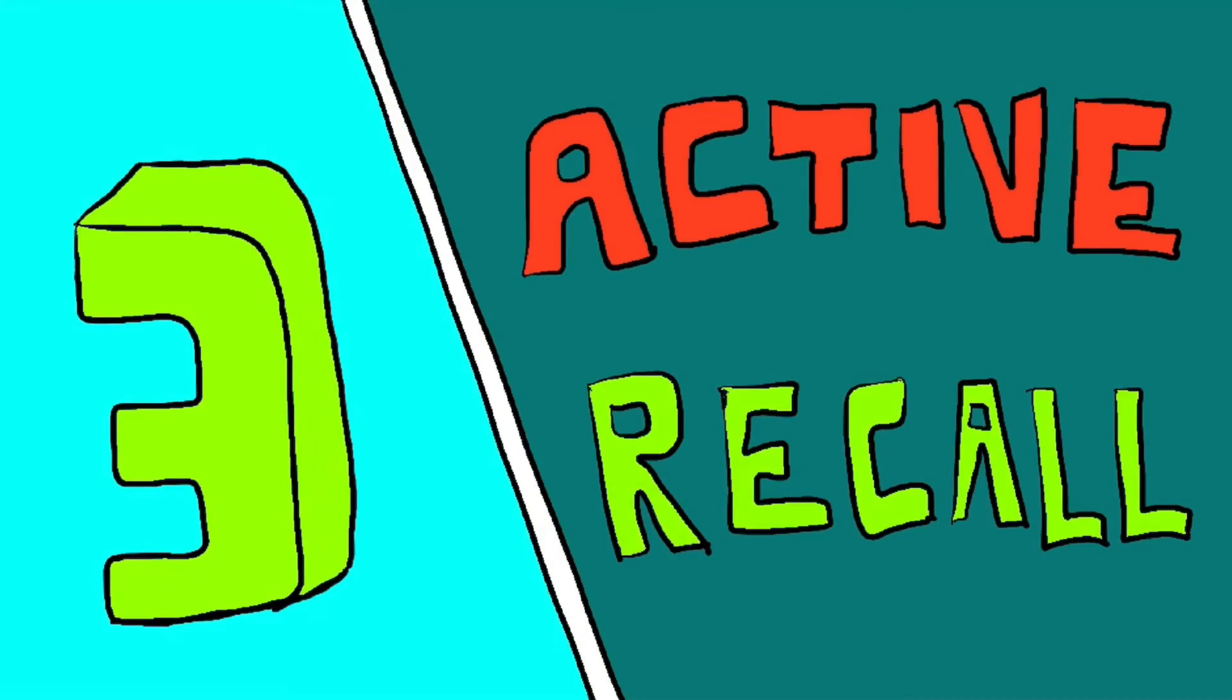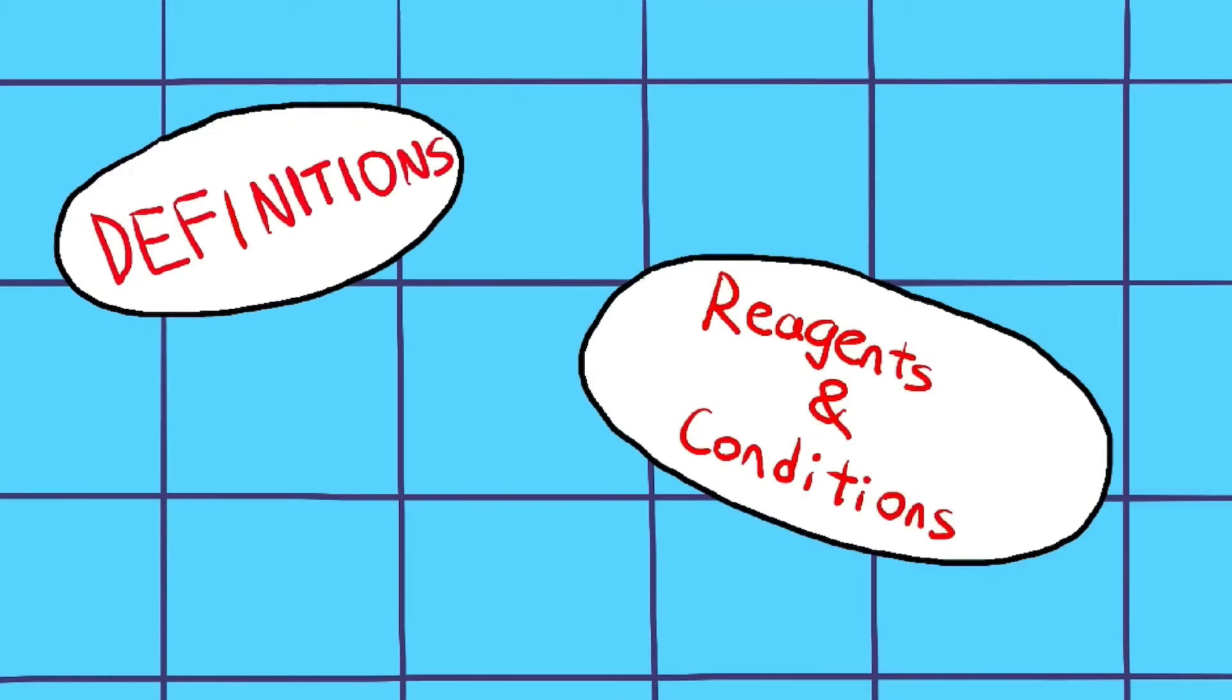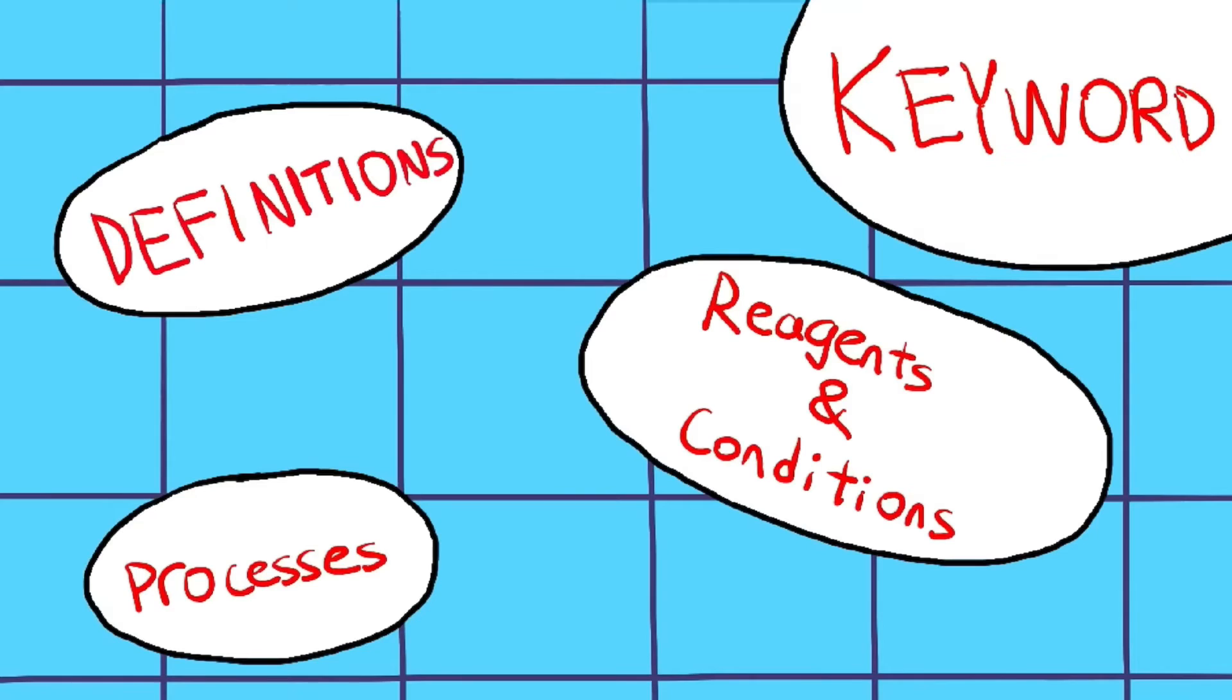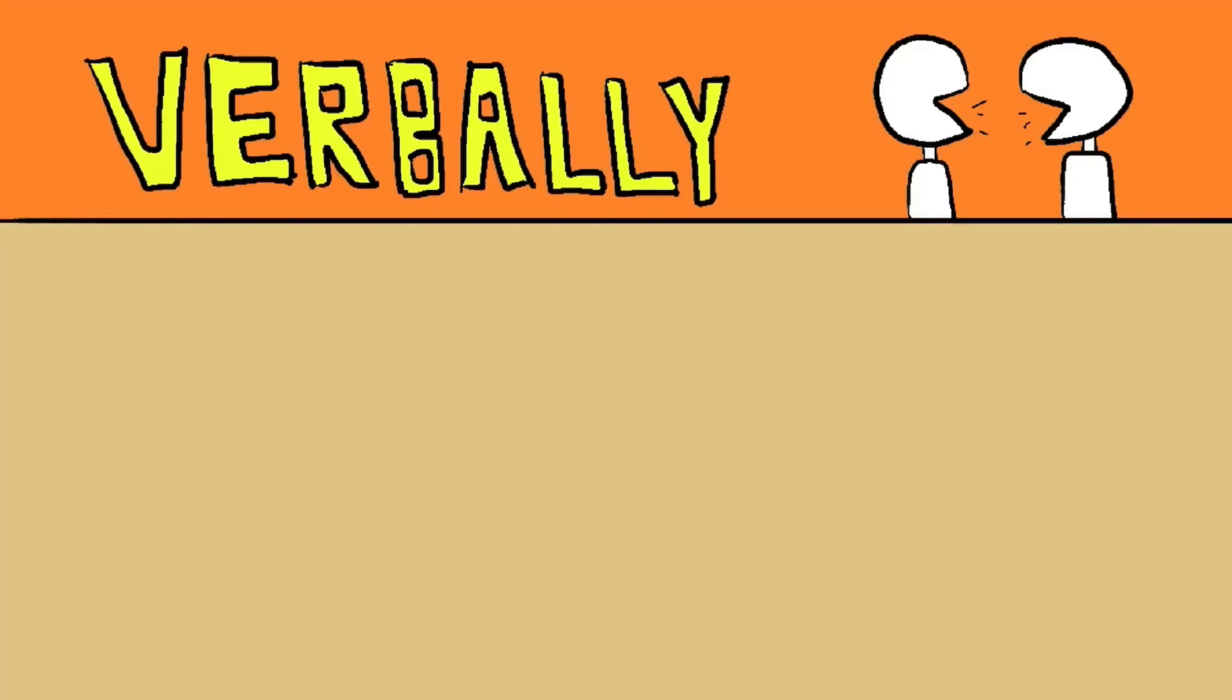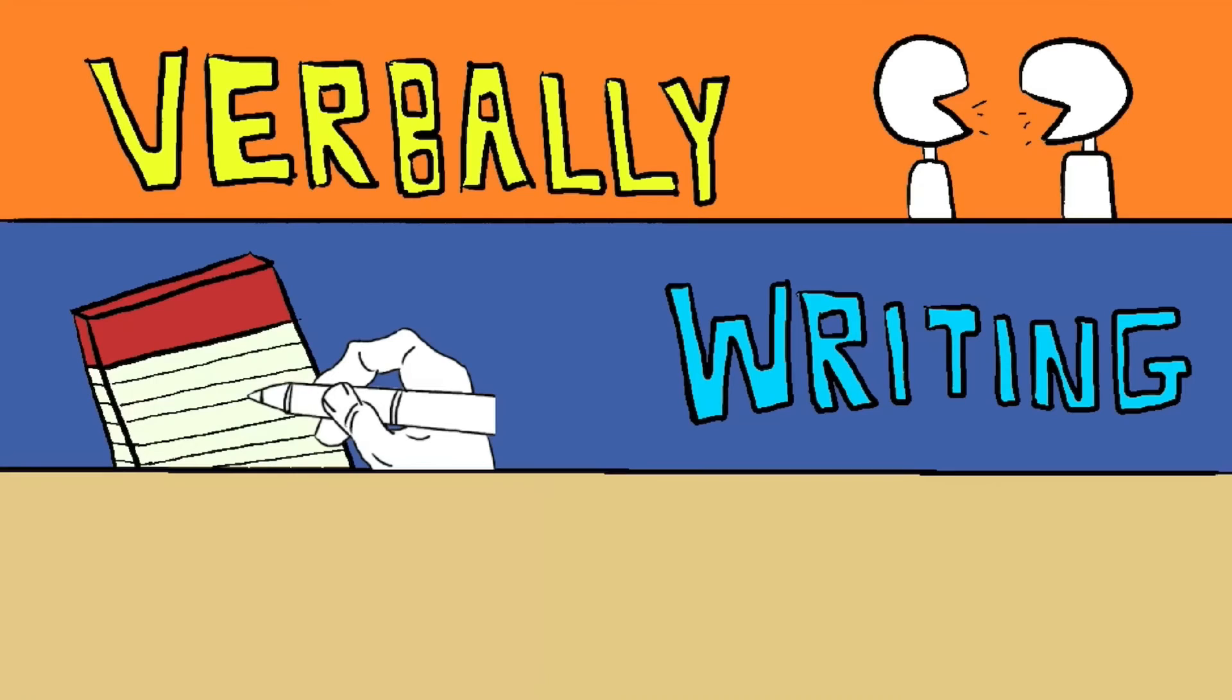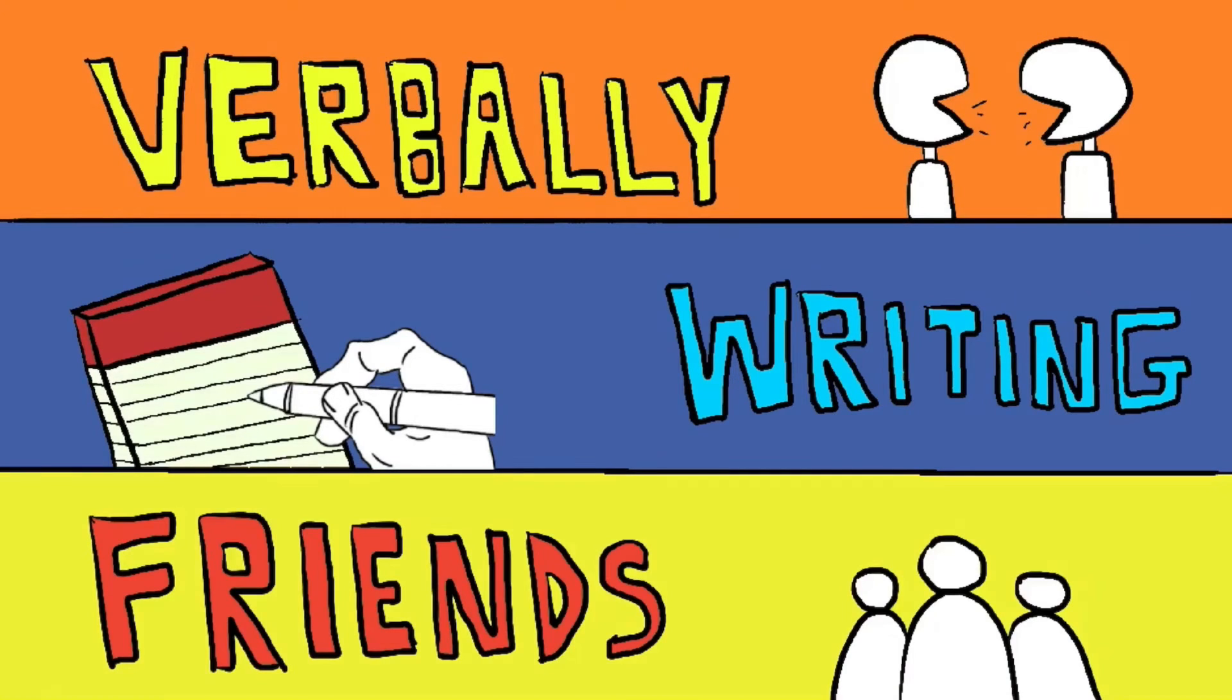Strategy number three: I did active recall by testing myself consistently. This is especially helpful for things that you have to memorize such as definitions, reagents and conditions for organic chemistry, processes, keywords, and the phrasing when answering trend questions in periodic table, etc. There were a couple of ways in how I tested myself. The first way to test yourself is to recall to yourself verbally by just saying it out loud to yourself. Another way to test yourself is by writing it down or to get your friends to test you or vice versa.